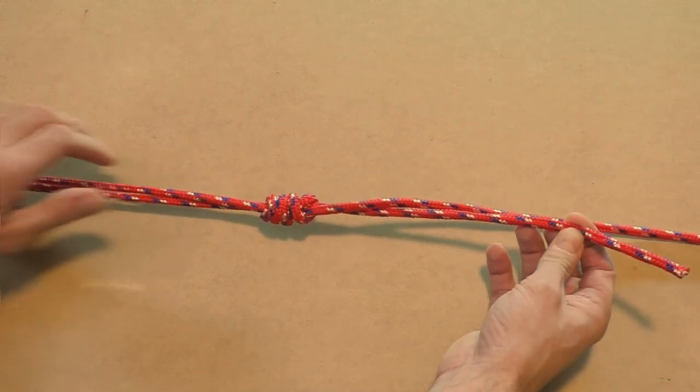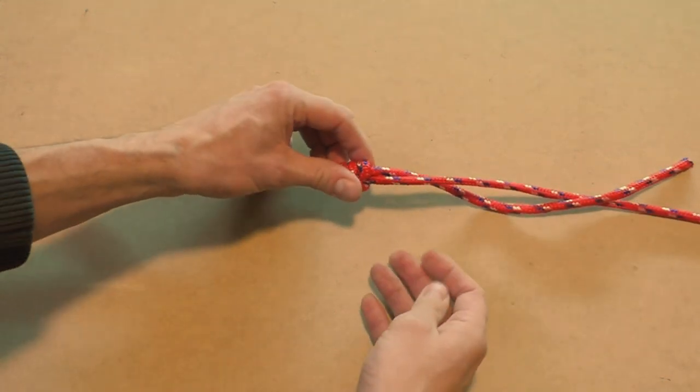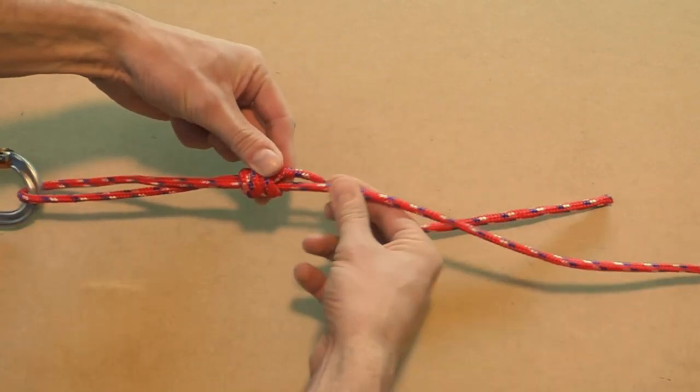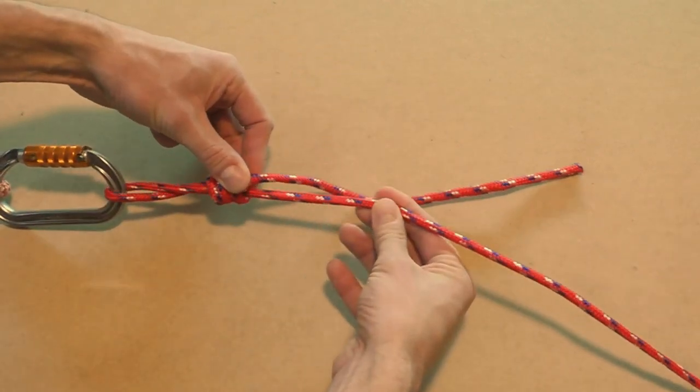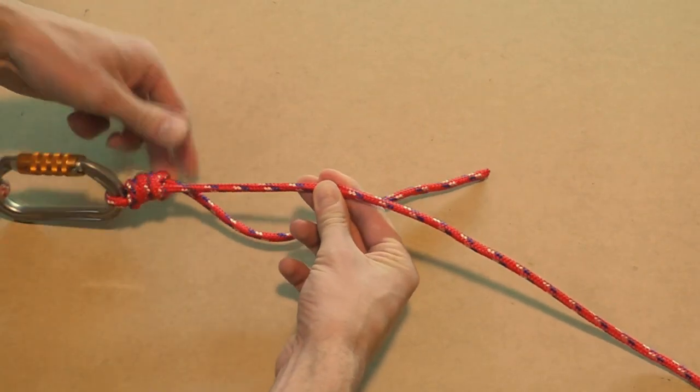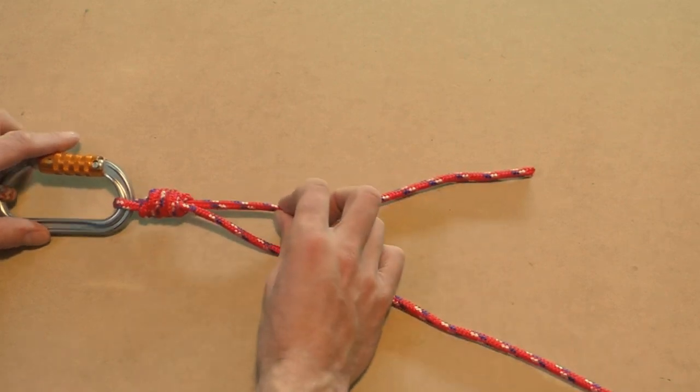Next pull on the standing part while holding the knot to close the loop and tighten it up against your hook or lure. Then set the knot by pulling on the working end. Finish by clipping off the remaining working end close to the knot but do leave a little bit sticking out.